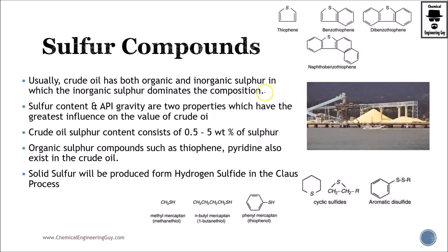Talking about sulfur, which is the most important non-hydrocarbon component, we can find it extensively from 0.5% up to 5%, even greater amounts, but typically we stick to these values for common crude oils. They contain both organic and inorganic sulfur, and mostly you can find inorganic sulfur, but you also need to ensure removing organic sulfur compounds.